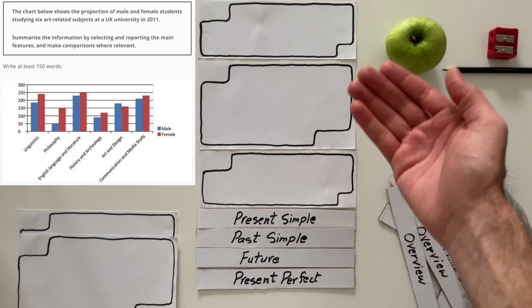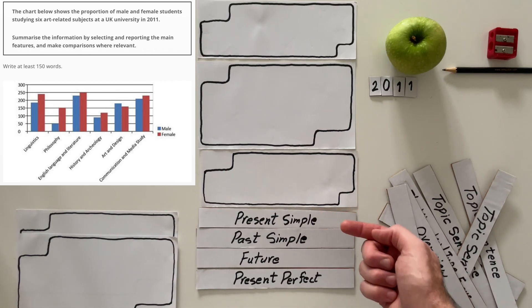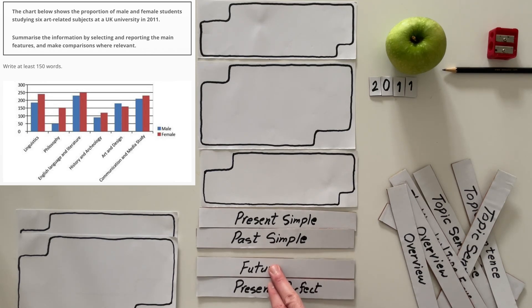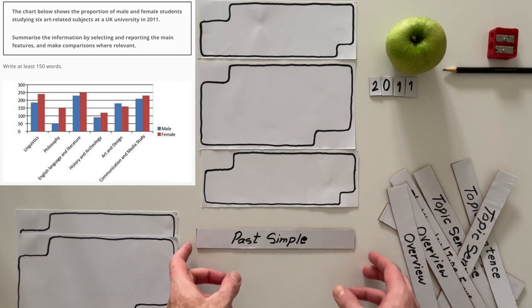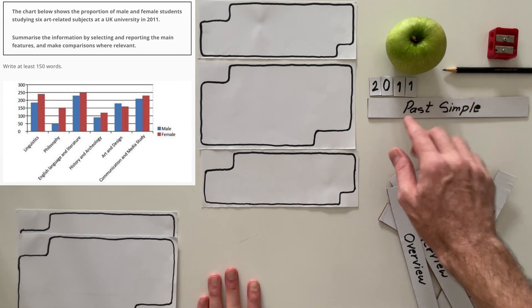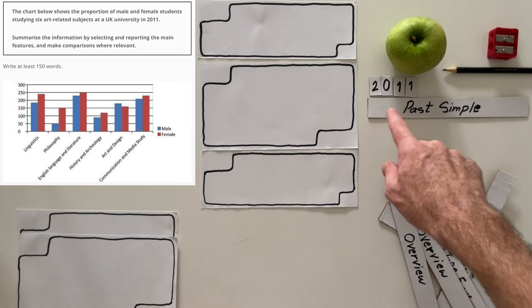This will determine our grammar tense. So for this report we do not need present simple, we do not need anything about future and present perfect, because we don't know the state of this university right now. So my grammatical tense is going to be past simple. I'm going to focus on all the events that happened in 2011.